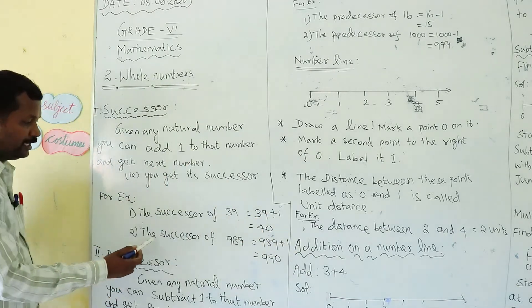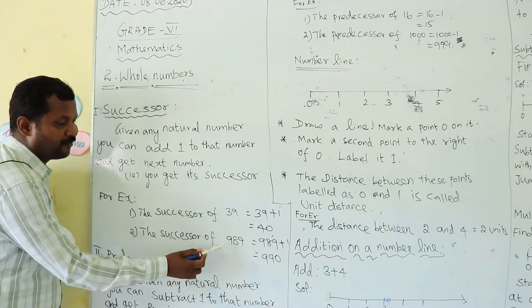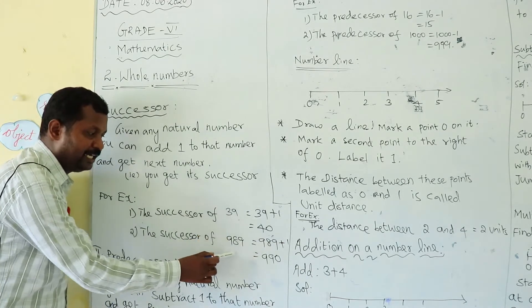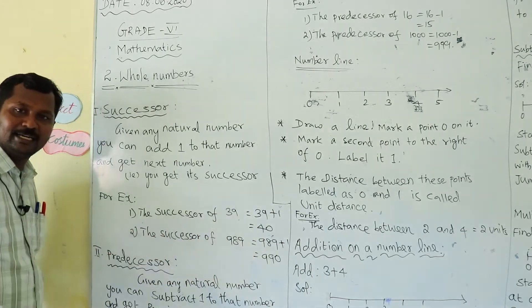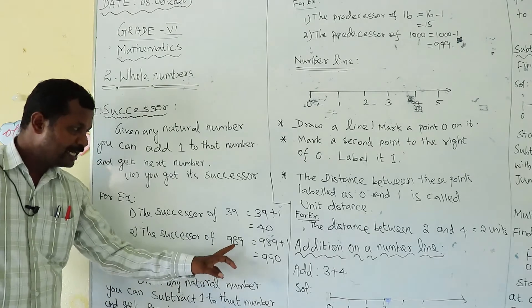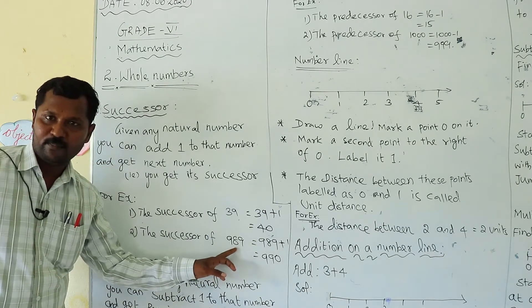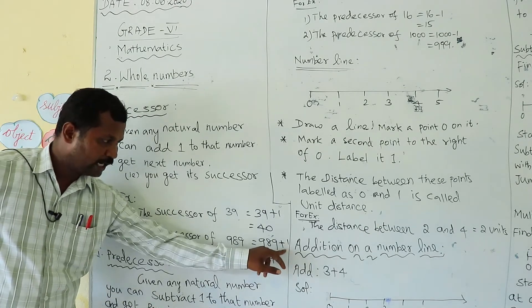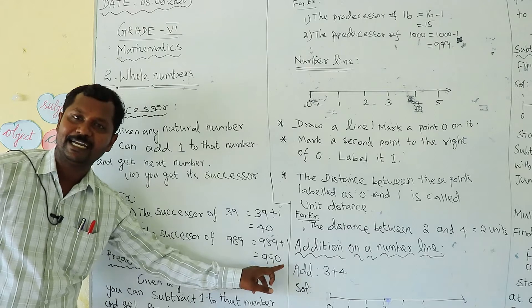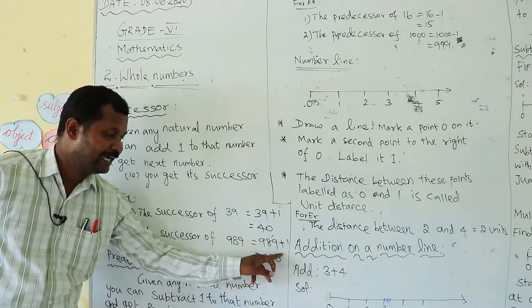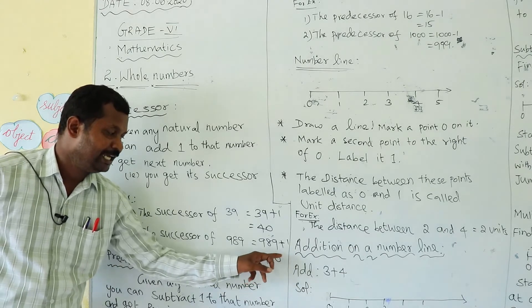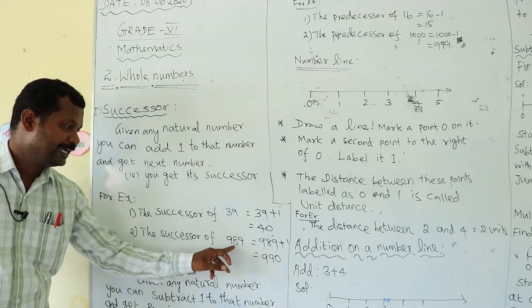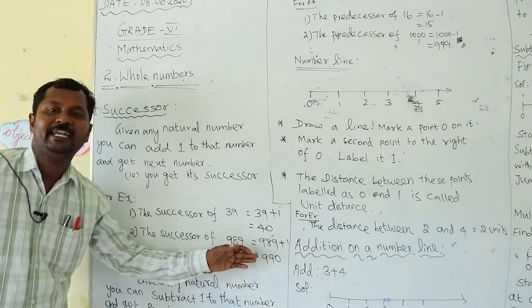Second example: the successor of 989. 989 is a given natural number. You can add 1 to get 990. So, 990 is the successor of 989.